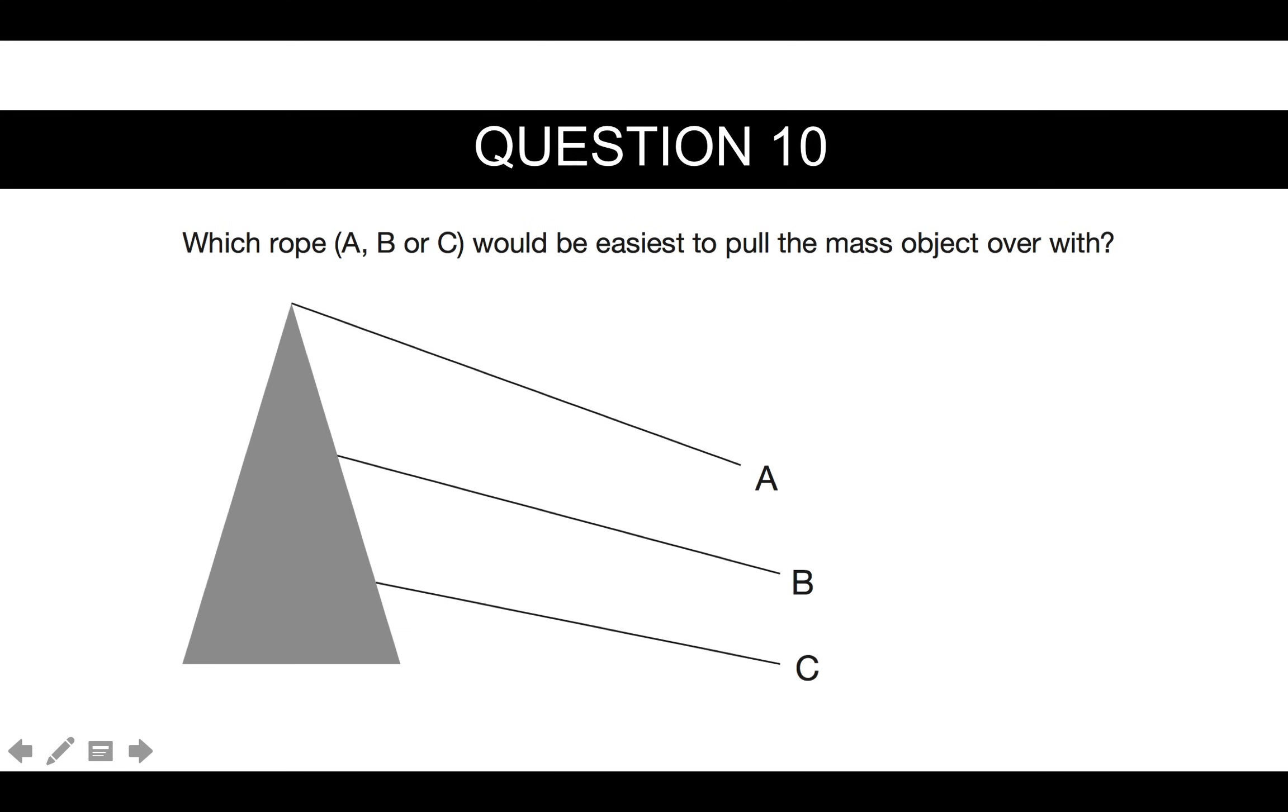Question ten. Which rope A, B or C would be easiest to pull the weight over with? Now, with regards to this, it all depends on the distance away from the rope, but also the height above the load. Generally, the higher above the load that the weight that the line is, it's easier to pull over. So the answer there is A.